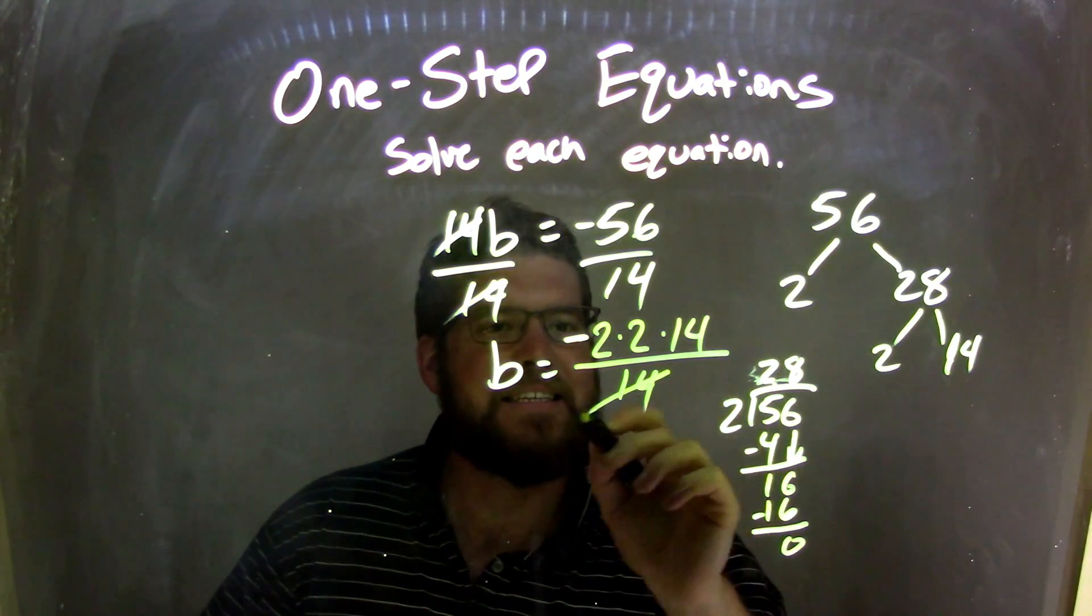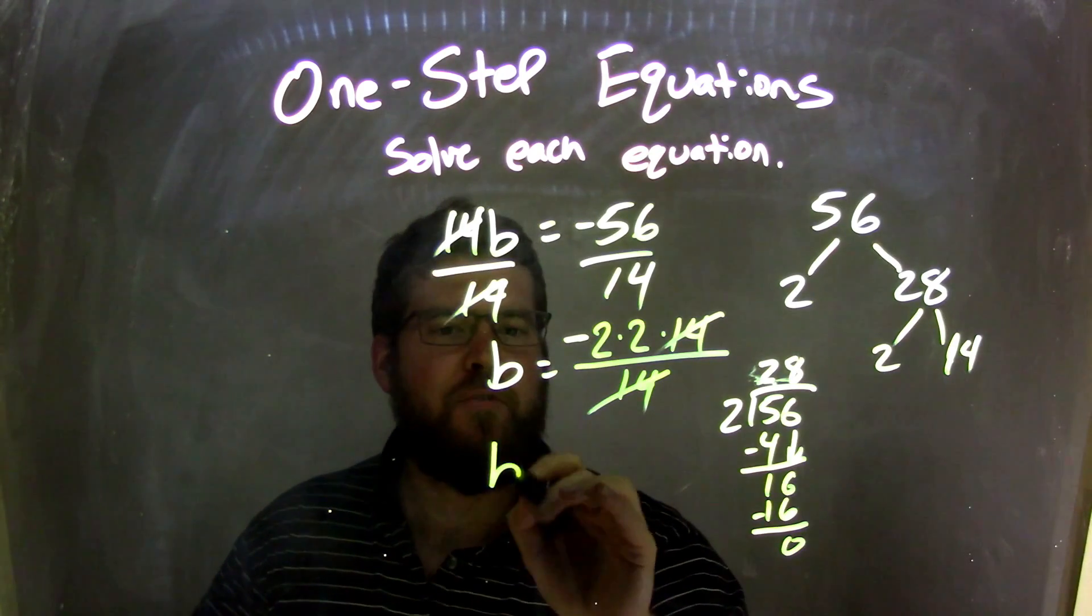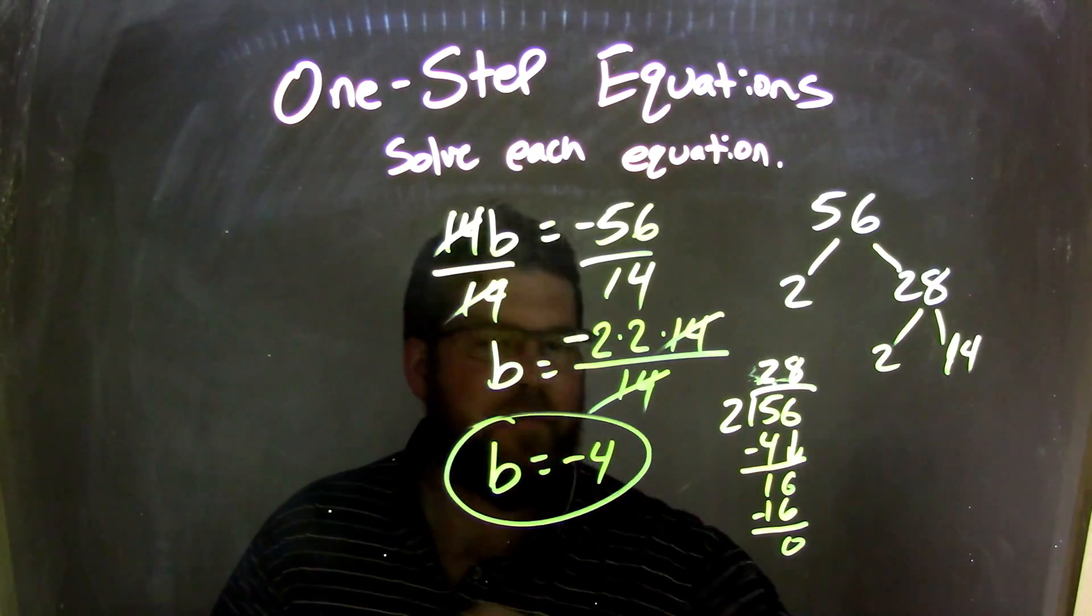Well, the 14s can just cancel. We have the negative, so the 14s cancel. So we have b equals negative 2 times 2, which is negative 4. And now I have my final answer.